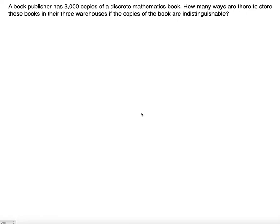A book publisher has 3,000 copies of a discrete mathematics book. How many ways are there to store these books in their three warehouses if the copies of the book are indistinguishable? So here you have three different warehouses. You can name them as warehouse A, warehouse B, and warehouse C.